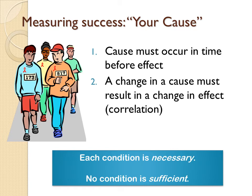The second condition is that a change in the cause must result in a change in the effect — this is called correlation. If the cause increases, the effect increases or decreases; if the cause decreases, the effect increases or decreases. It can be inverted or direct, but some sort of corresponding change has to occur. This is what correlation is.